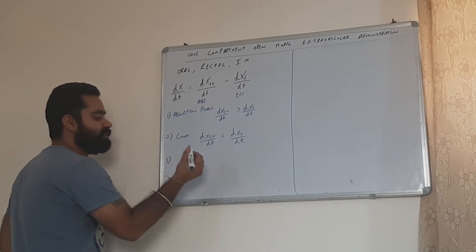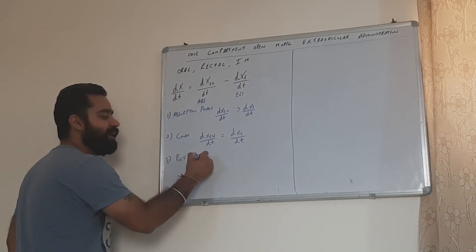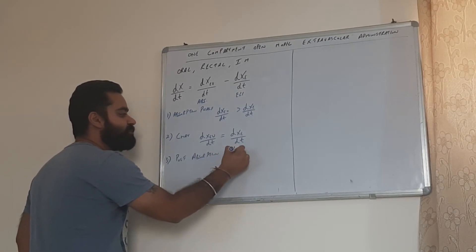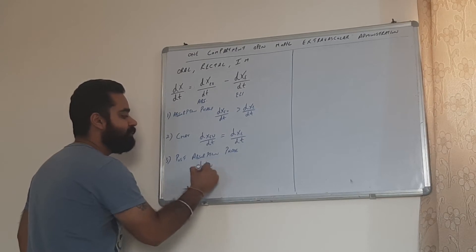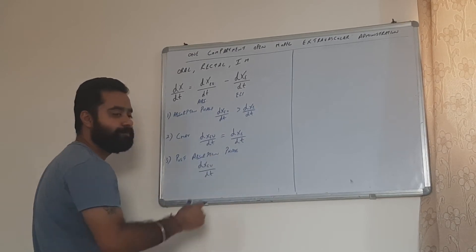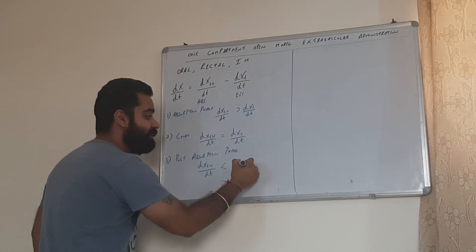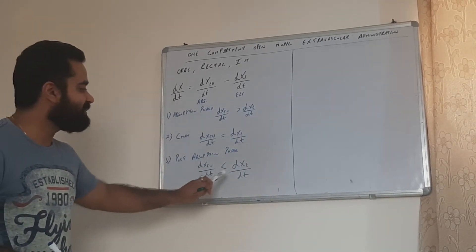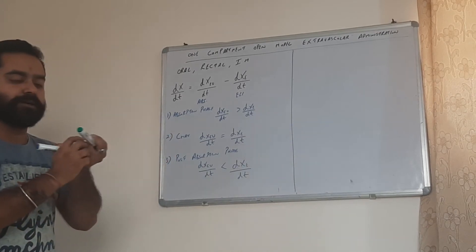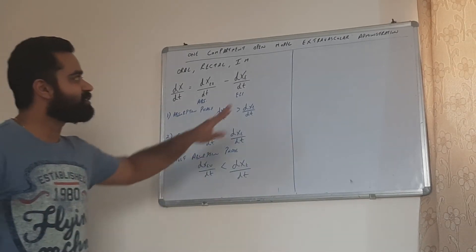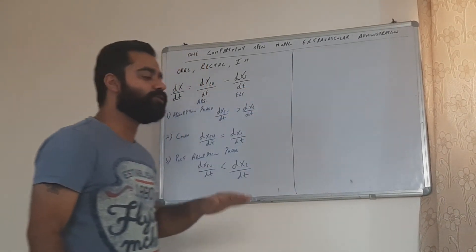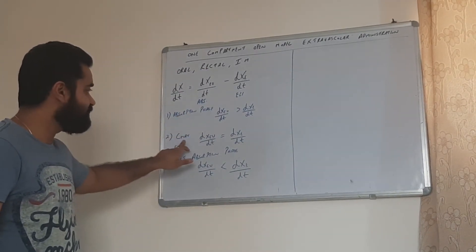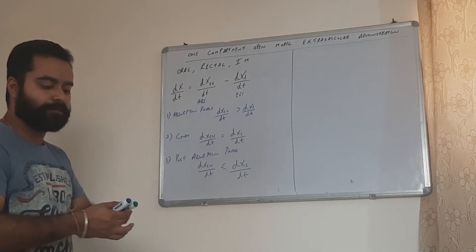The third case is the post-absorption phase, where elimination starts. In the post-absorption phase, dx_ev/dt is going to be less than dxe/dt, which means the rate of absorption is now less than the rate of elimination. So for any typical extravascular administration, we see three phases: the absorption phase, then Cmax, and the post-absorption phase.